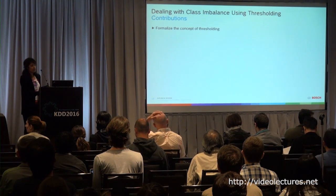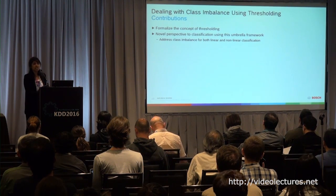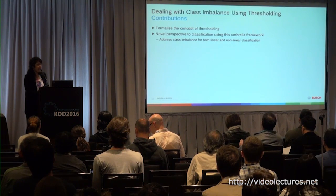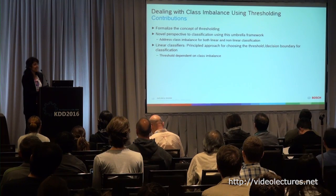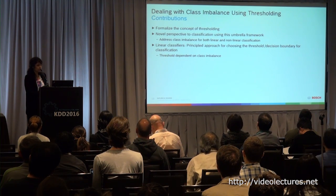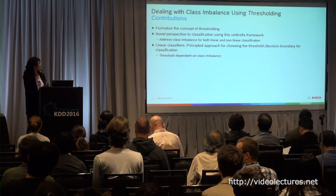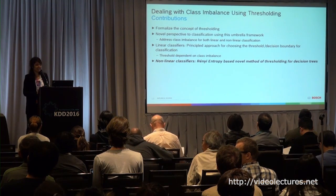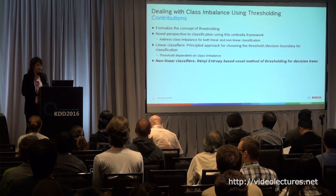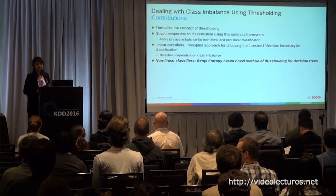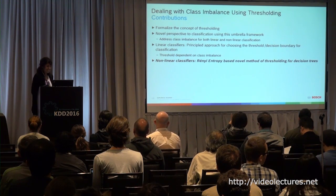Our contributions were formalizing this concept of thresholding. We had a novel perspective to classification using this umbrella framework, and we addressed class imbalance both in linear and nonlinear classification. In linear classification, we provided a principled approach for choosing the threshold dependent upon the class imbalance. For nonlinear classifiers, we had a Renyi entropy-based novel method for thresholding for decision trees. Dr. Schneider spoke about Renyi distributions — so Renyi is a current recurring theme.